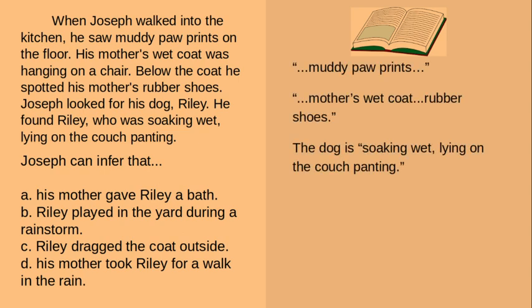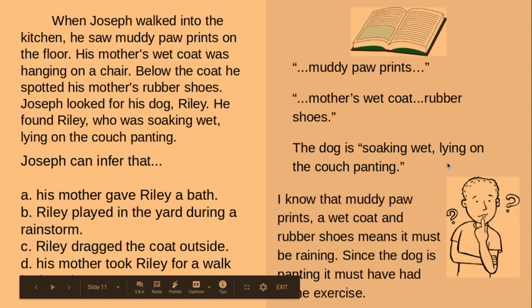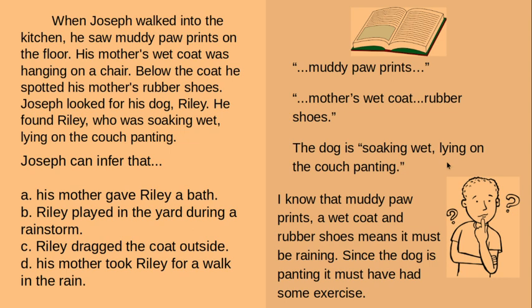Here's the text evidence I found: muddy paw prints, mother's wet coat, rubber shoes — which I know are good for walking outside in the rain — and the dog is soaking wet, lying on the couch, panting. My background knowledge tells me that muddy paw prints, a wet coat, and rubber shoes all point to it raining outside. Since the dog is panting, it must have had some exercise. He could have gotten a bath, but the coat and rubber shoes don't support that. Riley played in the yard is possible — he is muddy and panting — but we have to consider all the clues together. Riley dragging the coat outside is unlikely. His mother took Riley for a walk in the rain is the best inference.